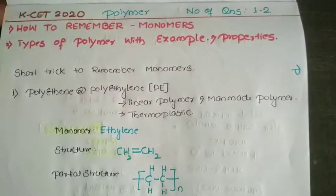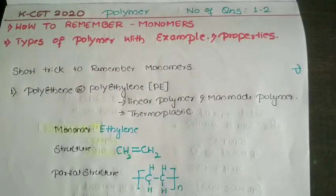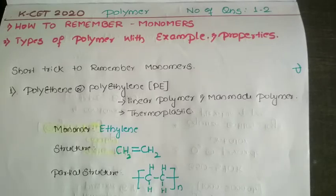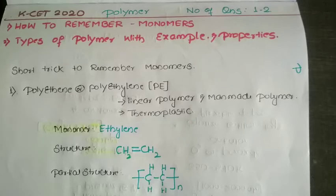We're going to start with some examples of homopolymers. As we know, homopolymers are polymers where the monomer units are all of the same kind. When n number of monomer units undergo polymerization, all the monomer units are of the same kind — those are called homopolymers. We'll discuss examples of homopolymers with their monomer units here.